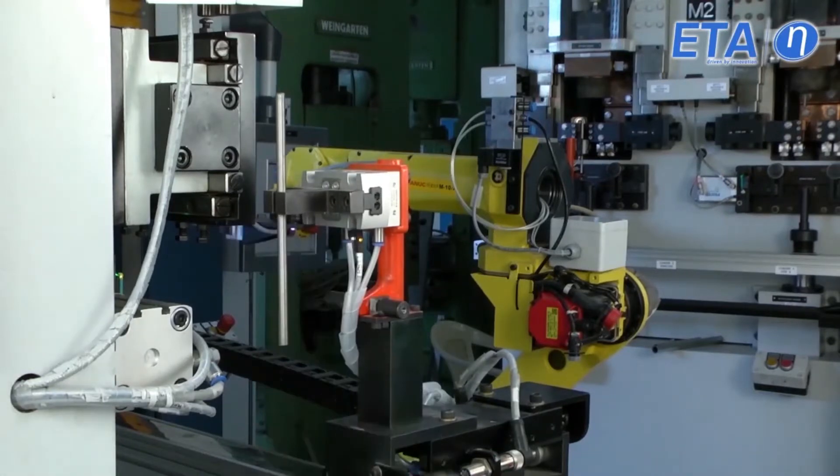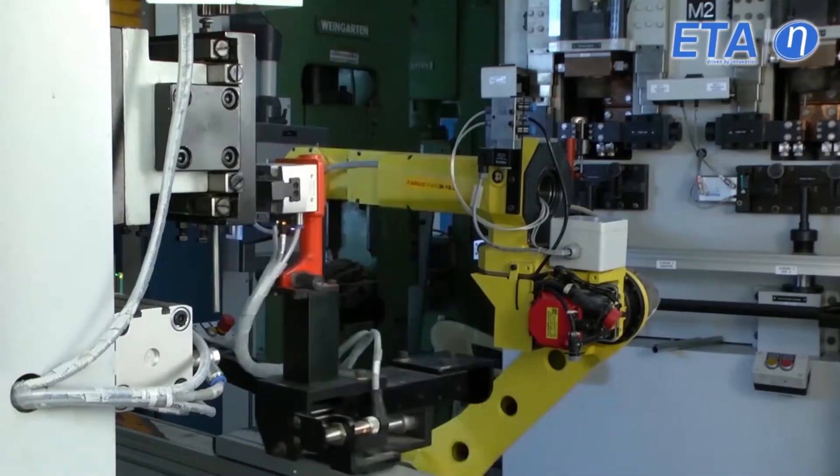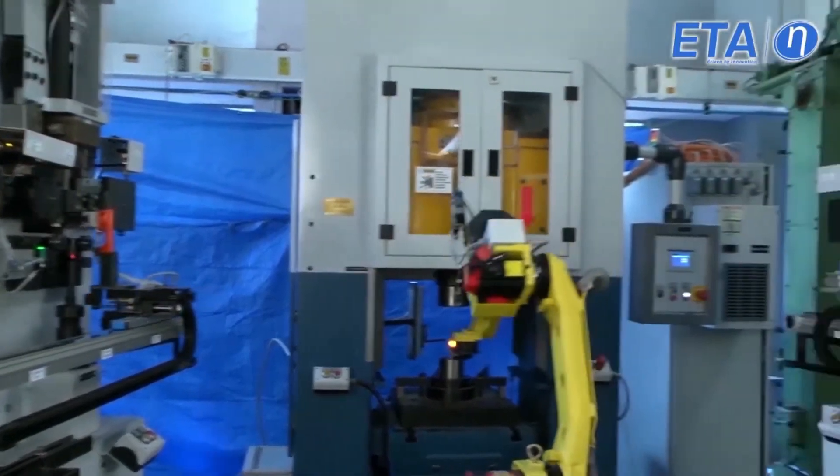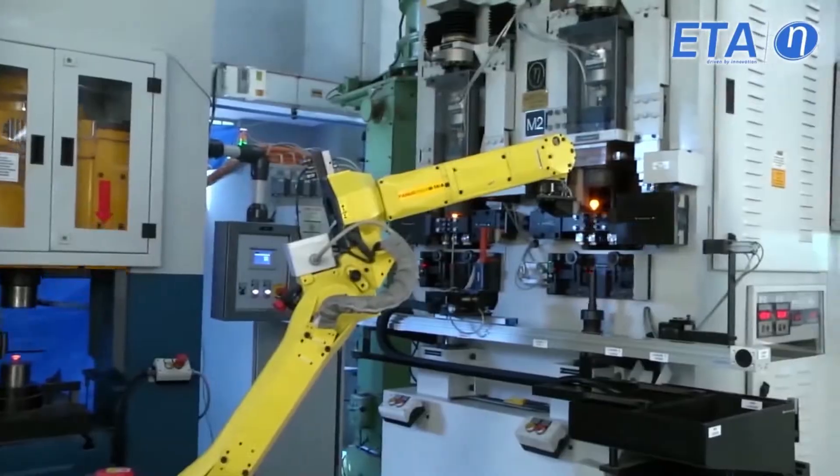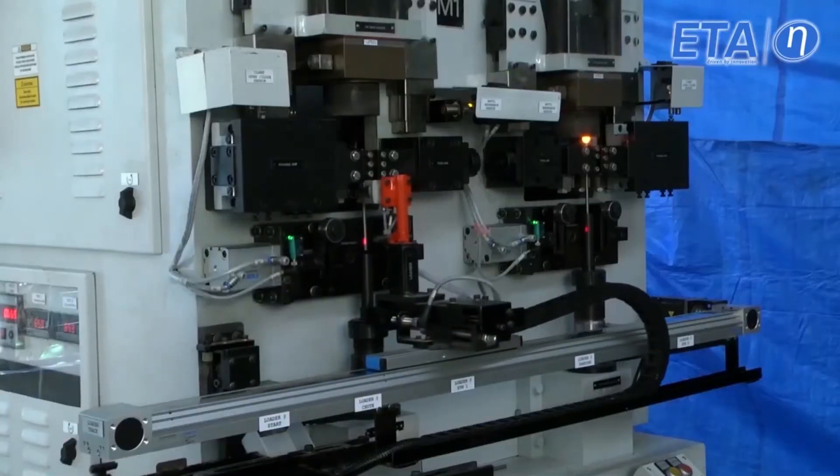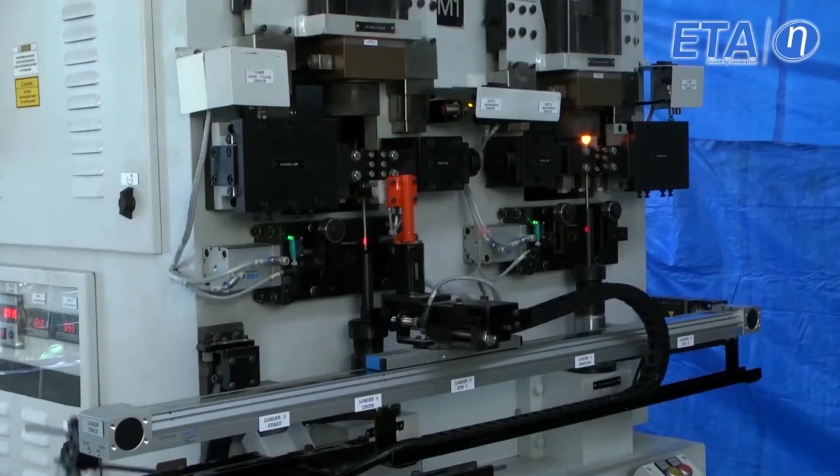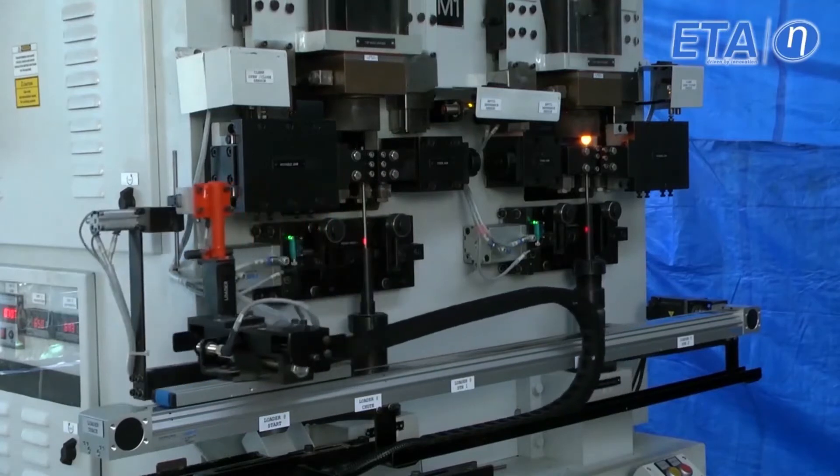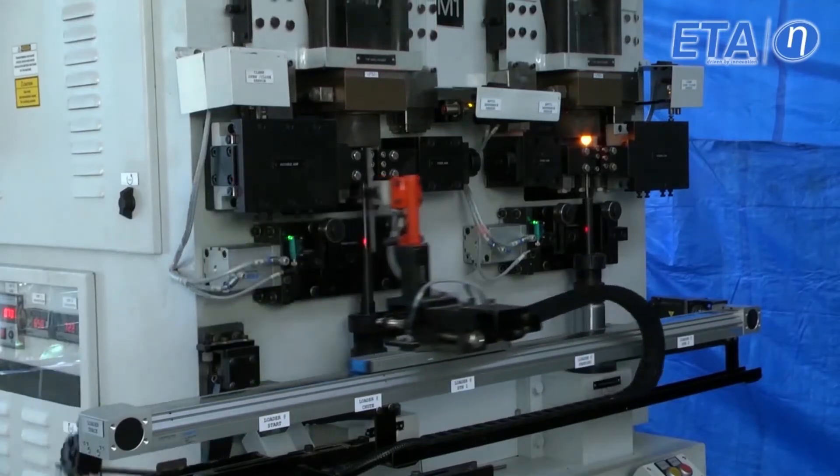The upsetting cycle takes place sequentially in all four stations. The job is loaded onto the clamping vice and held loosely. The job is moved vertically by the upsetting cylinder.